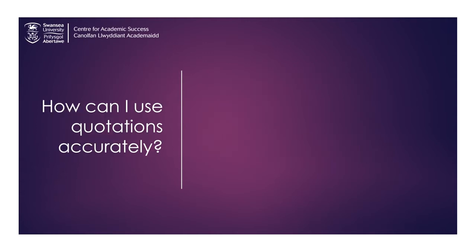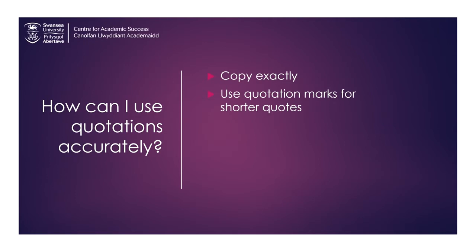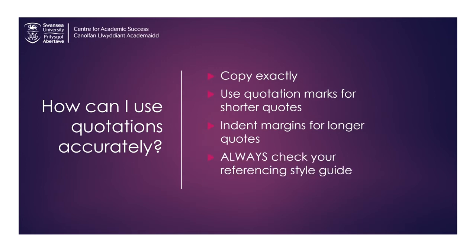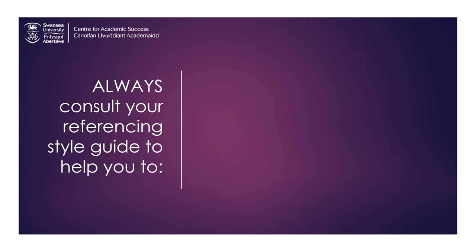When you have decided that you will use a quote in your writing, you need to think about some of the rules for using them correctly. As mentioned earlier, quotes should be copied word for word from the original text using the same punctuation, same word order, and same sentence structure. Shorter quotes — often considered 40 words or less, or four lines or less depending on the referencing style you're using — are usually placed in quotation marks. Whereas longer quotes are often indented in narrower margins and not encased in quotation marks. Be sure to check the referencing style that you're using for the correct format.